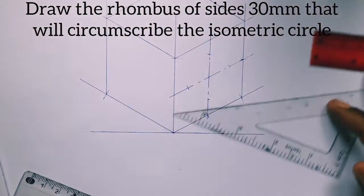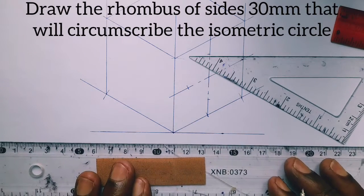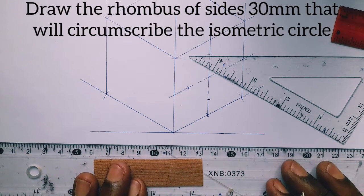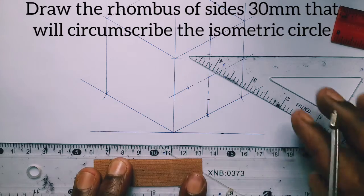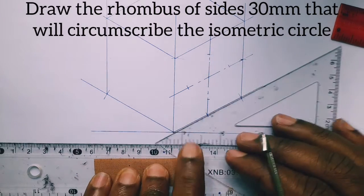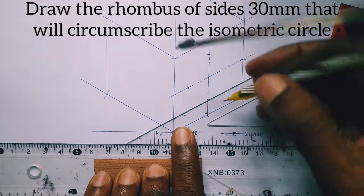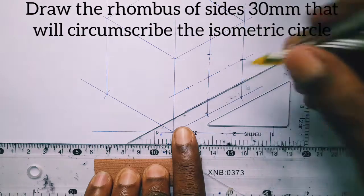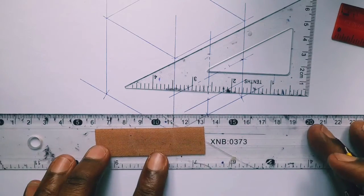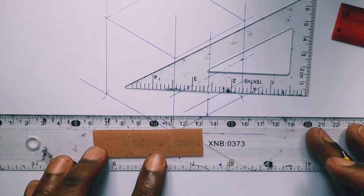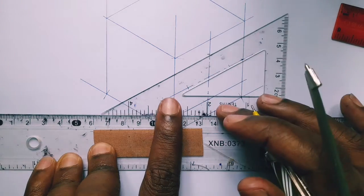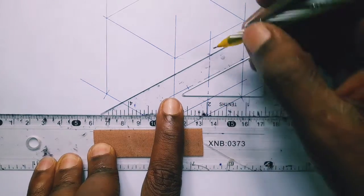And now we draw the four sides of the rhombus using a straight edge and a 30-degree set square. The base of rhombus is parallel to one of the isometric lines of the box. Of course the top is also parallel to the opposite side.